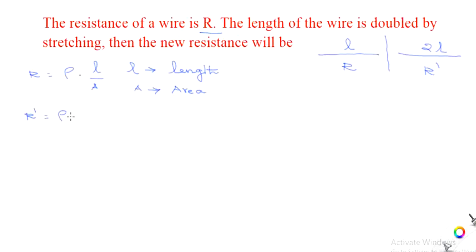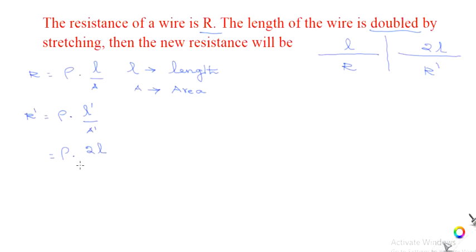Rho will not change — specific resistance will not change. Now, the new length will be L dash and the new area of cross section will be A dash after stretching. L dash is given: since length is doubled, L dash is equal to 2L. A dash we do not know.